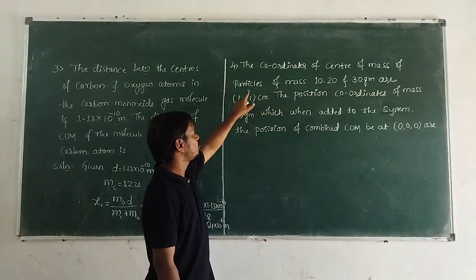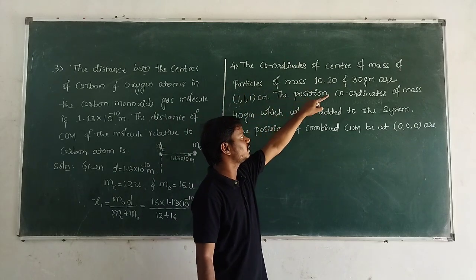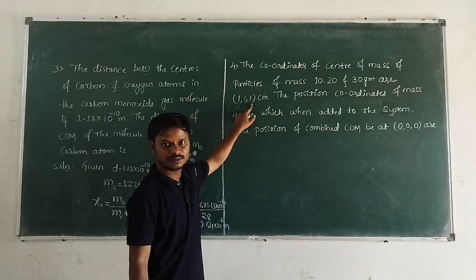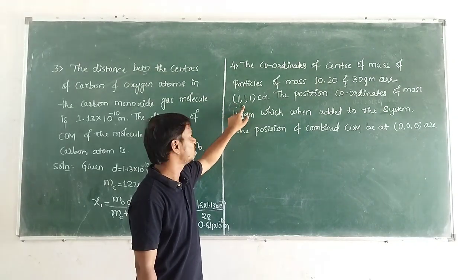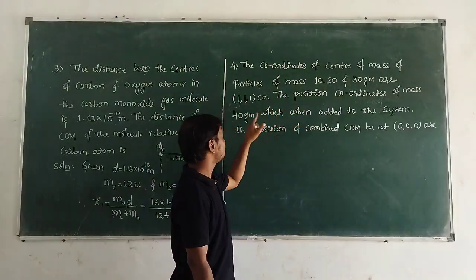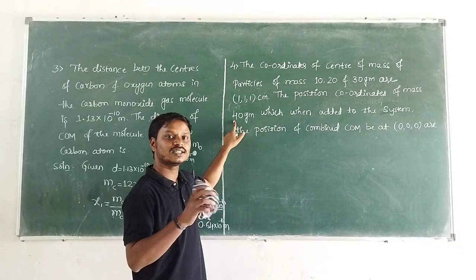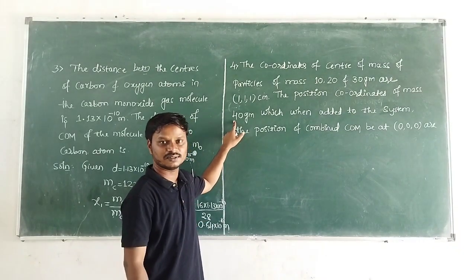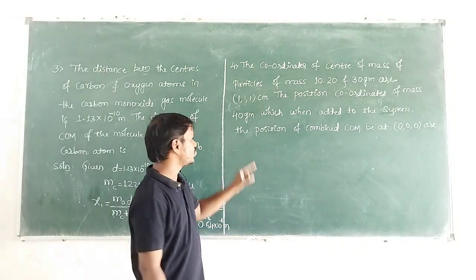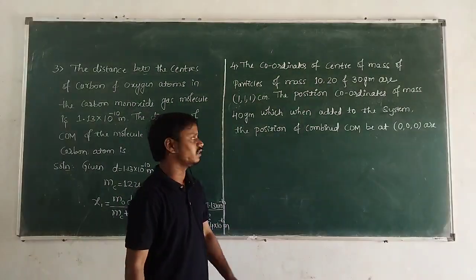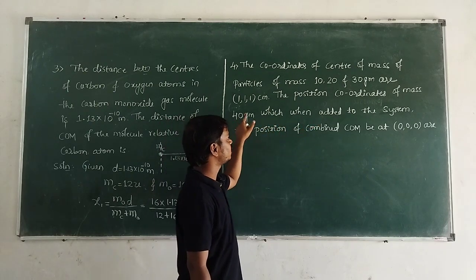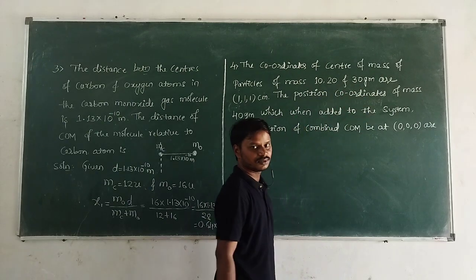The coordinates of center of mass when the masses are 10, 20, and 30 gram are (1, 1, 1). We have to find X4, Y4, and Z4 — the position coordinates of the 40 gram particle, which is the fourth particle. When 40 gram is added to the system of 10, 20, and 30 gram, the position of the combined center of mass becomes (0, 0, 0).